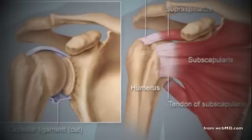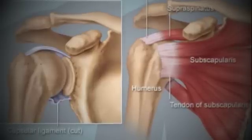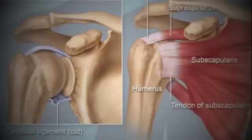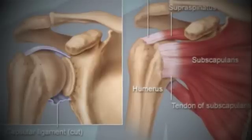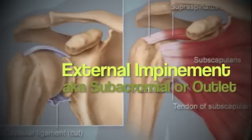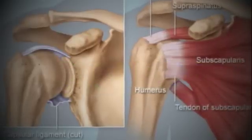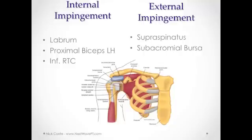Impingement is a very generic and overly used term. The difference between internal and external impingement really comes down to which side of the rotator cuff and capsule we're talking about. The top side is external impingement because it's external to the capsule, also known as outlet impingement or subacromial impingement. Internal impingement involves the underside of the rotator cuff, the capsule, the proximal insertion of the biceps tendon at times, and the labrum itself.